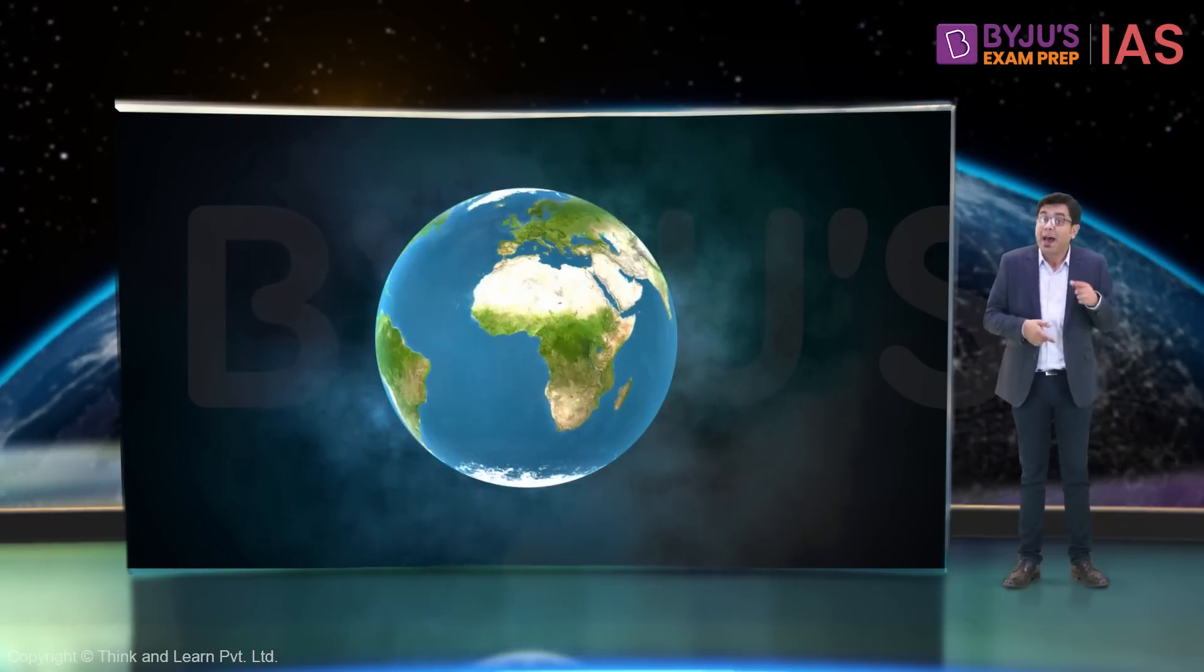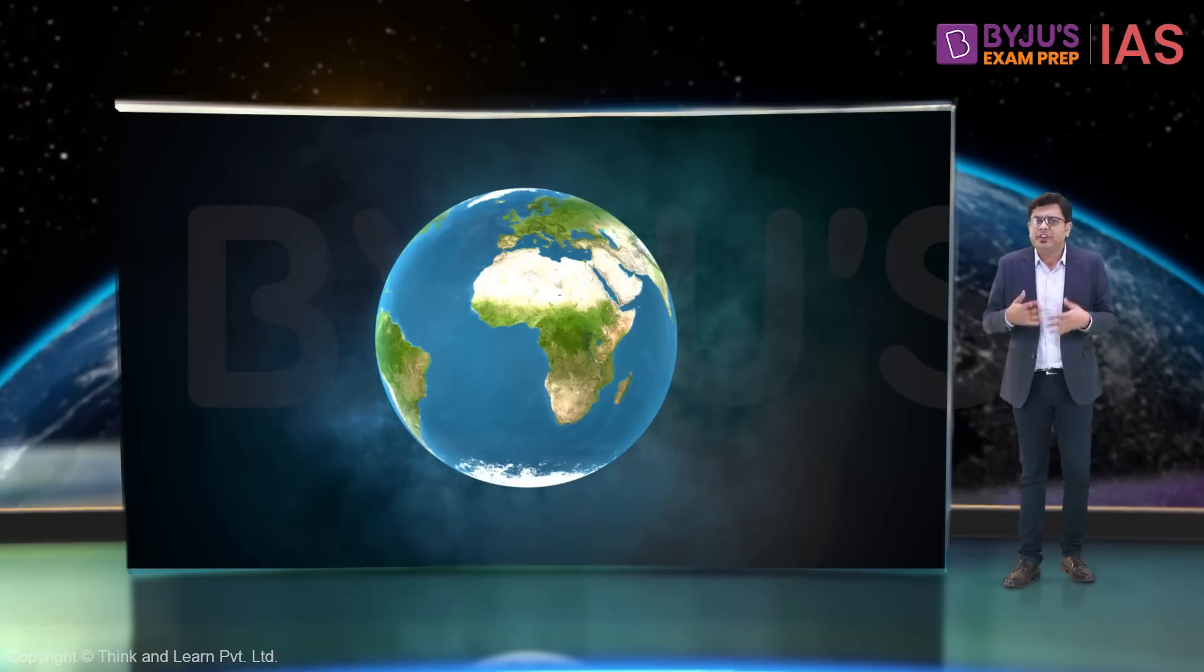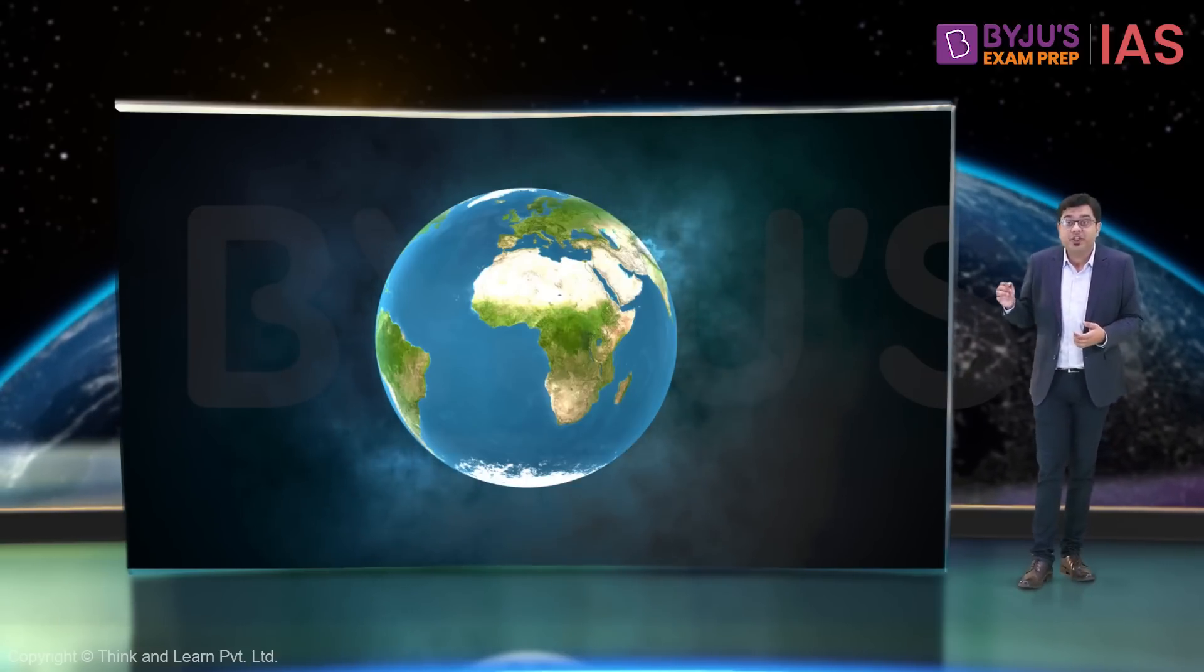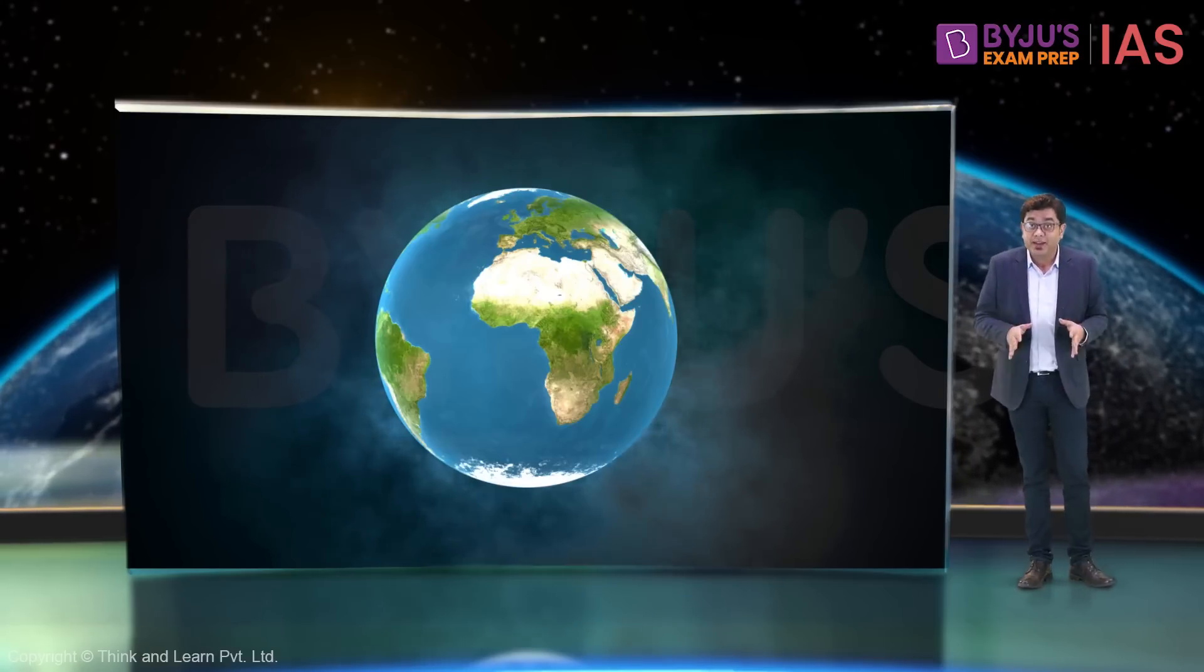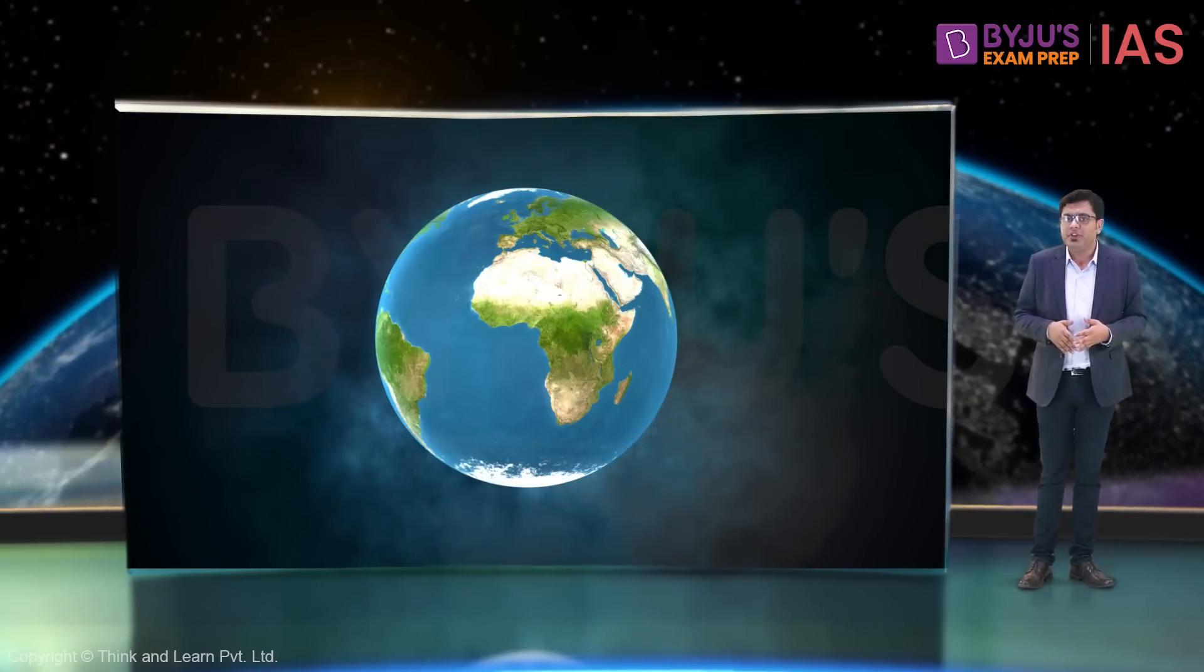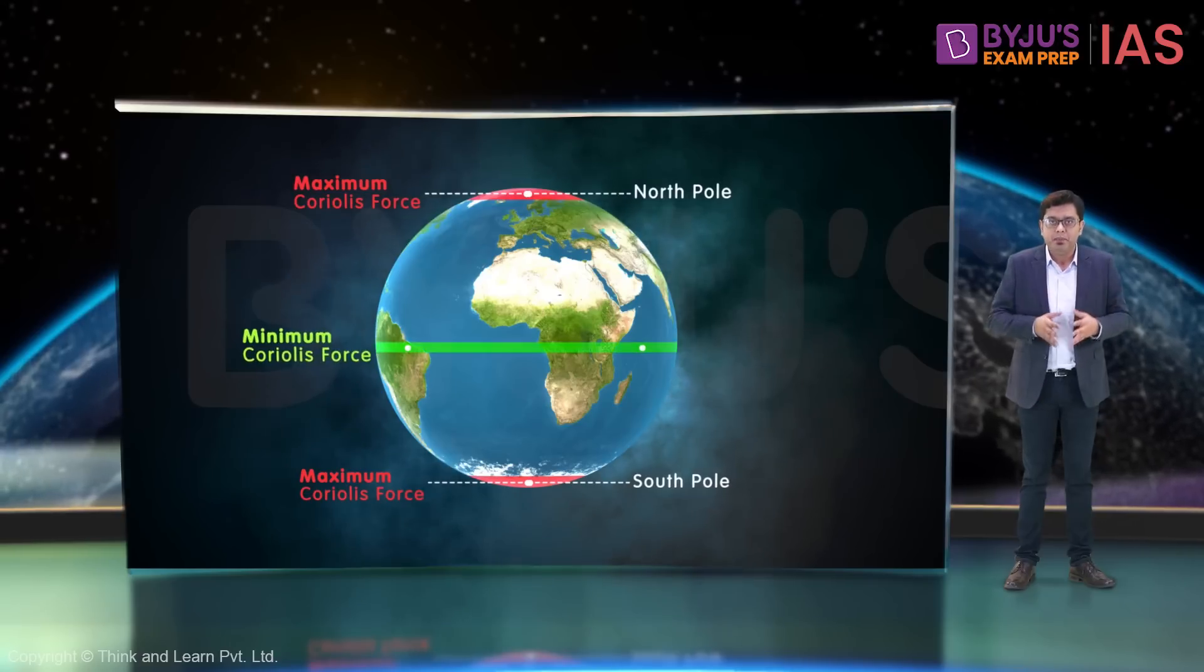Something similar happens in the polar regions as well. Because of their flatness, a deflection of nearly 90 degrees can be observed and thus, Coriolis force is said to be maximum at the poles and minimum at equator.